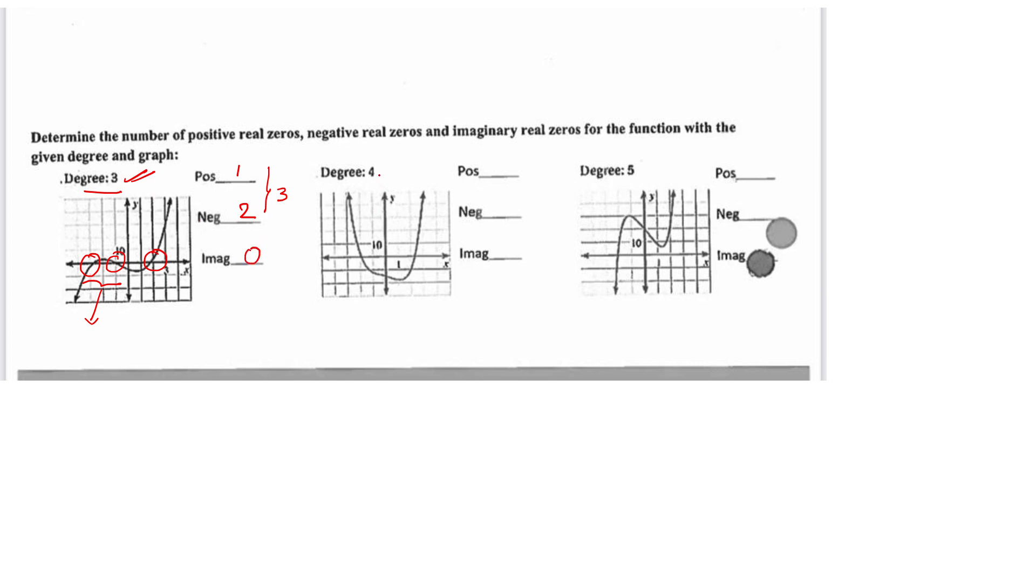Now see here the degree is 4 and the graph is cutting the x-axis at two different points, one at this point and one at this point. Here we got one positive root and one negative root. If you count both the roots it will be 2, but the degree is 4, so therefore there should be two other roots. That will be two imaginary roots.